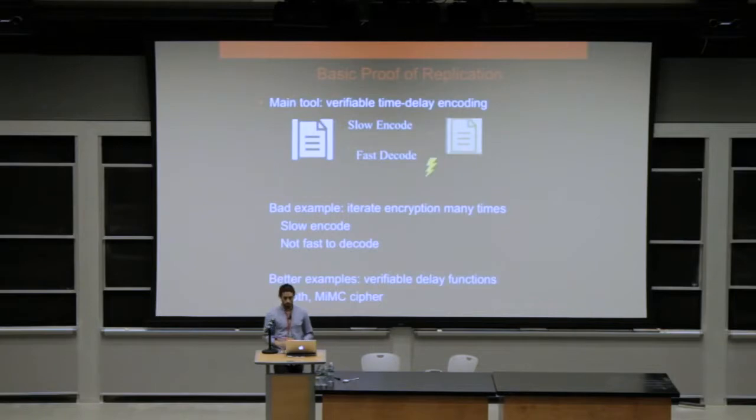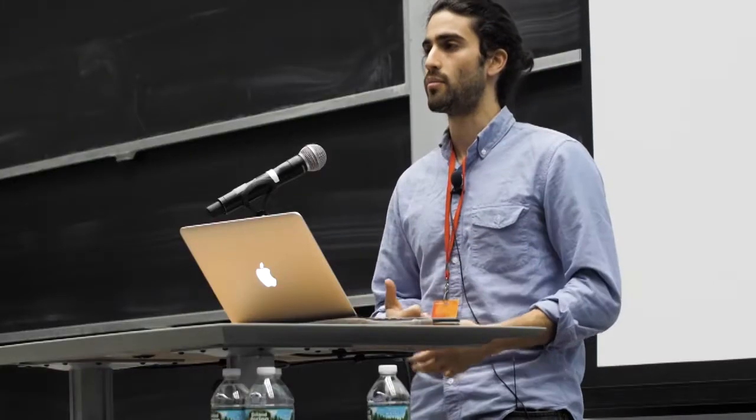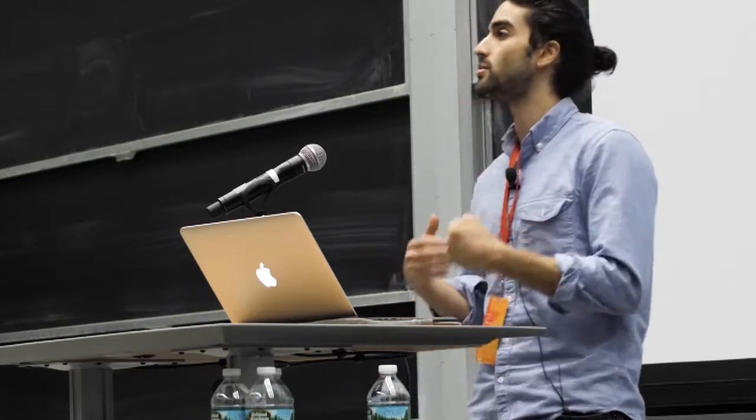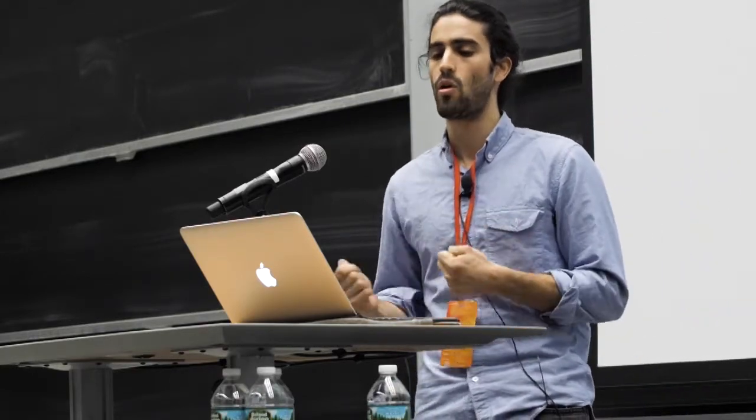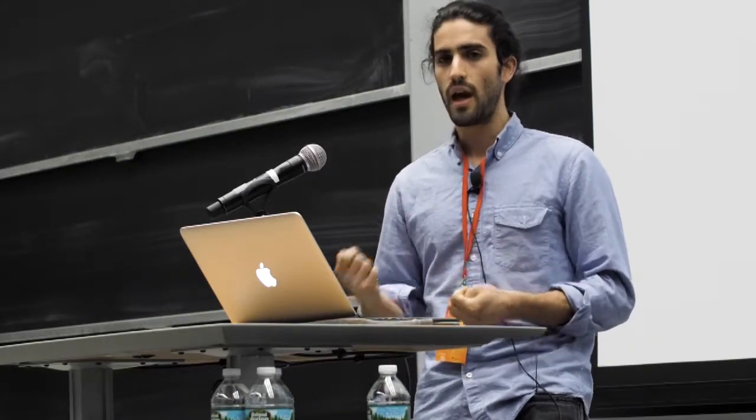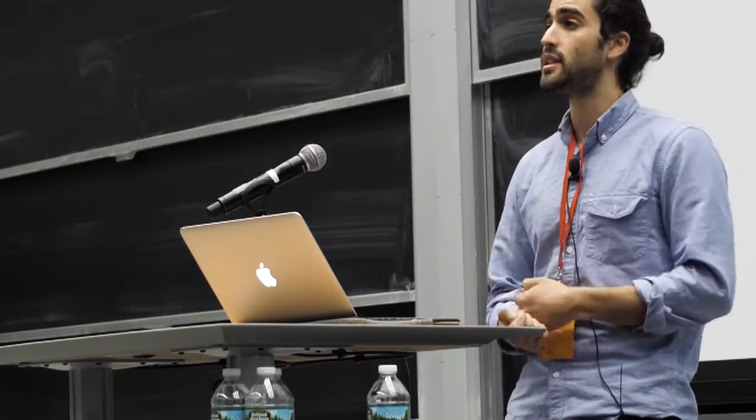Let me give you the basic idea behind a proof of replication. The main tool we need to use is a verifiable time delay encoding. At a very informal, intuitive description, this is an encoding that takes a long amount of time to generate. Time to use wall clock time, not computational effort, but specifically wall clock time. It's a sequentially slow encoding. And on the other hand, it's fast to decode.